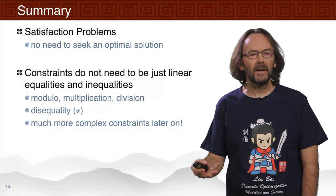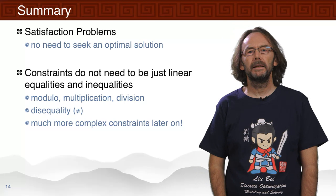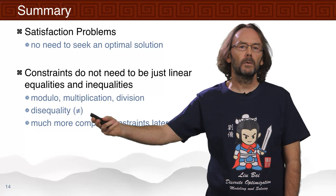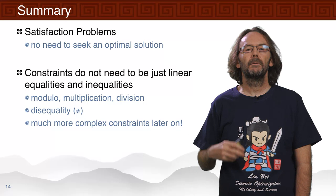In summary, we've seen a satisfaction problem where we're interested in just finding a solution, not necessarily finding the best solution for a particular objective. We've also seen that constraints don't just need to be linear equalities and inequalities — here we've used modulo and disequality, and we could also use multiplication and division. One of the powers of a modern modeling language is to be able to write down very complex, highly nonlinear constraints and have our solvers solve them.